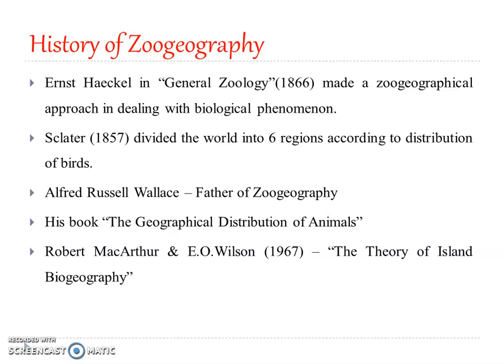In the 19th century, important contributions were made by Ernst Haeckel, a German scholar, who came up with a book on general zoology in 1866 where he made a zoogeographical approach in dealing with biological phenomena. Then in 1857, Dr. Sclater divided the world into six regions according to the distribution of birds — that is actually a zoogeographical study.